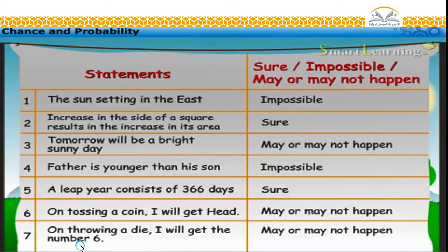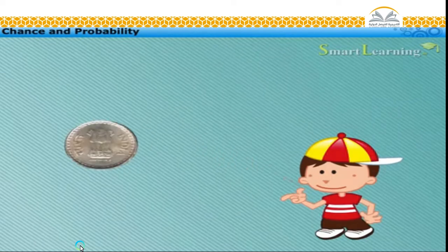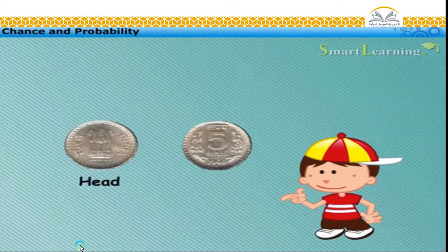From this table, we understand that there are some statements which are sure to happen, some are impossible, whereas some may or may not happen. For example, when we toss a coin, it has two possible outcomes: either head or tail.